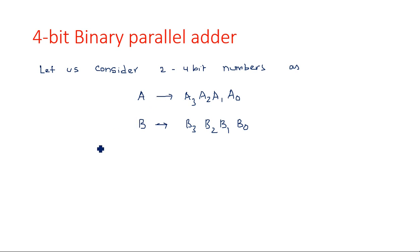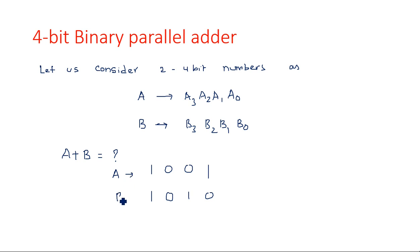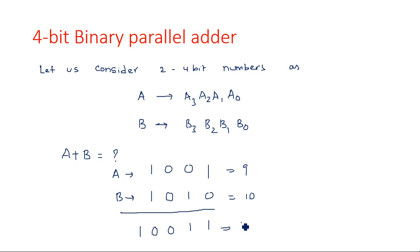Now these two numbers have to be added. How to add them? A plus B — how to do the addition between these two? Consider A equal to 1001 and B equal to 1010. So A is equal to 9 and B is equal to 10. When you are adding these two, 1 plus 0 is 1, 0 plus 1 is 1, and 1 plus 1 gives 1 0. This gives you 19. When you are adding two 4-bit numbers, the result is a maximum of 5 bits.